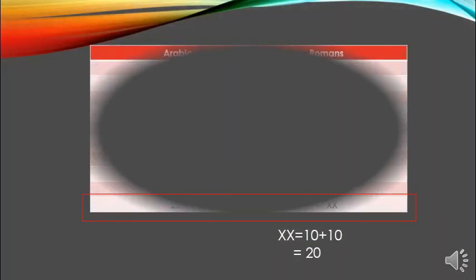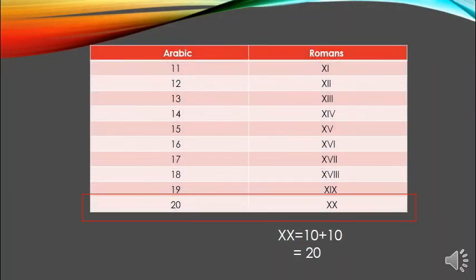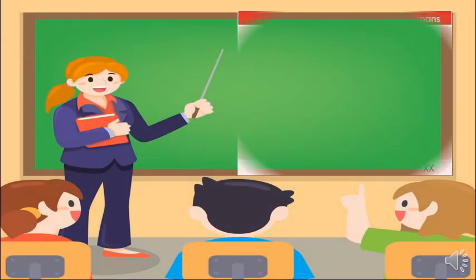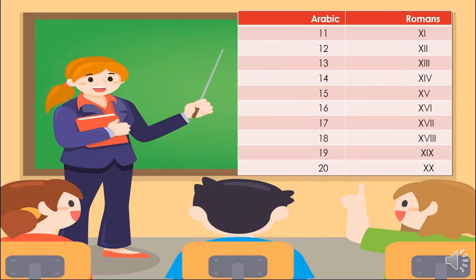And the last number is 20. 20 represents XX. X equals 10 and the next X equals 10, so 10 plus 10 equals 20. Hope you can easily understand the Roman numerals. Thank you.